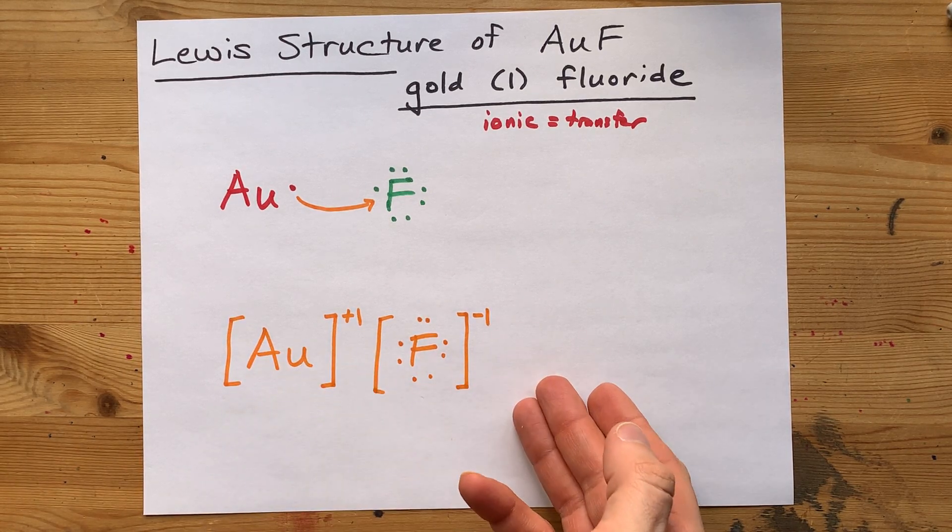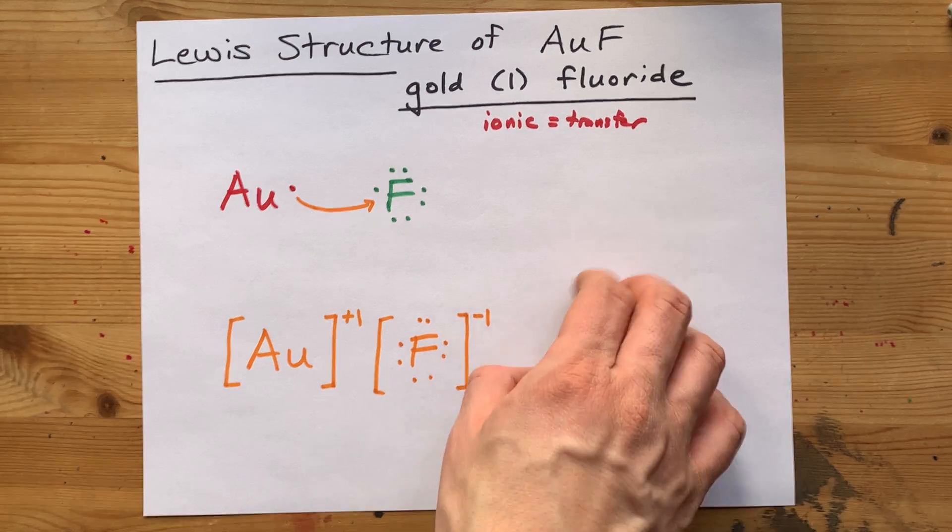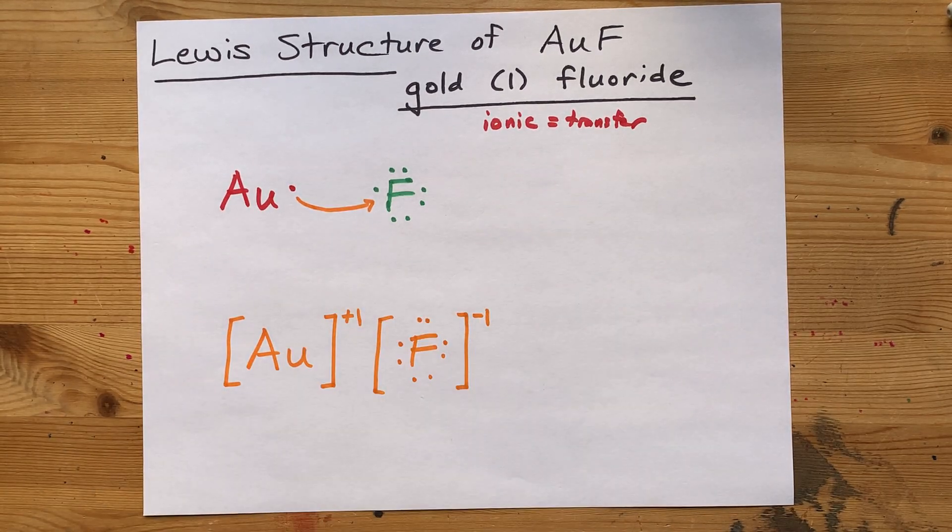This is your completed Lewis structure for gold one fluoride. And that's all there is to it. Thank you for being with me, and best of luck.